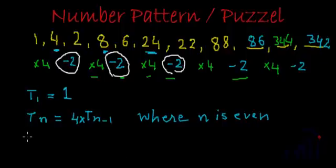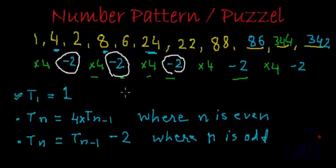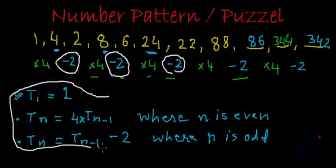And we have to write one more logic for the odd place terms where Tn is equal to Tn minus 1 minus 2. So this is the general notation of the series, the number pattern. This will define how the number pattern actually behaves. And by using these formulas, we can find any term of this pattern.